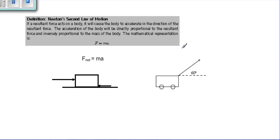You must know your definition which says if a net force is applied on an object, it will cause the body to accelerate in the direction of the force. The acceleration of the body will be directly proportional to the resultant force and inversely proportional to the mass of the body. The mathematical representation is F net equals ma.